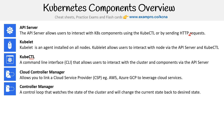We have the controller manager. This is a control loop that watches the state of the cluster and will change the current state back to the desired state — so it's basically state management. You could also think of it as the brain of Kubernetes, because it's doing all the controlling.